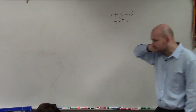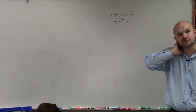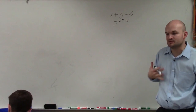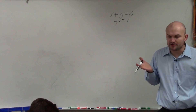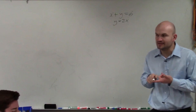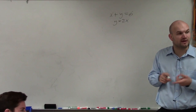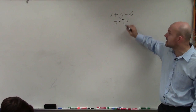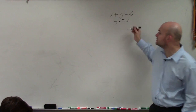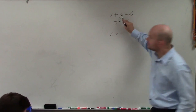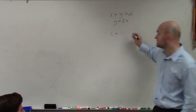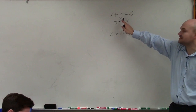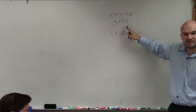When doing substitution, always try to find the variable that has a coefficient of 1 or negative 1 and get it by itself. In this case, y equals 2x, so I know the value of y is equal to 2x. I go back to my first equation and instead of plugging in y, I plug in what y equals, which is 2x.